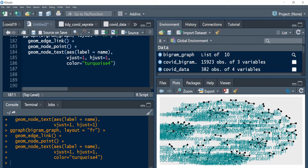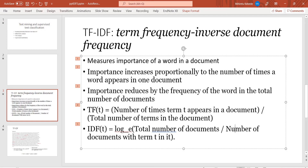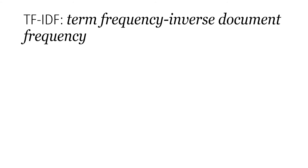For today, what I'm more interested in is term frequency inverse document frequency. This is a really important measure when dealing with text analysis, because it gives you a lot of power for your machine learning models and improves your classification performance. This is a very important measure of the importance of what is in a document.